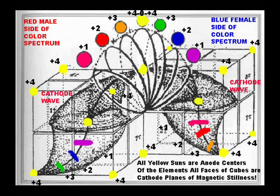On the red male side of the color spectrum, the male dominates the female in its electrical charging condition to create a sphere. On the blue female side of the color spectrum, the mother dominates the father and unwinds the sphere back into the inert gases of the next octave, while charging the spinning rings of elements to a higher position in the spiral periodical table.